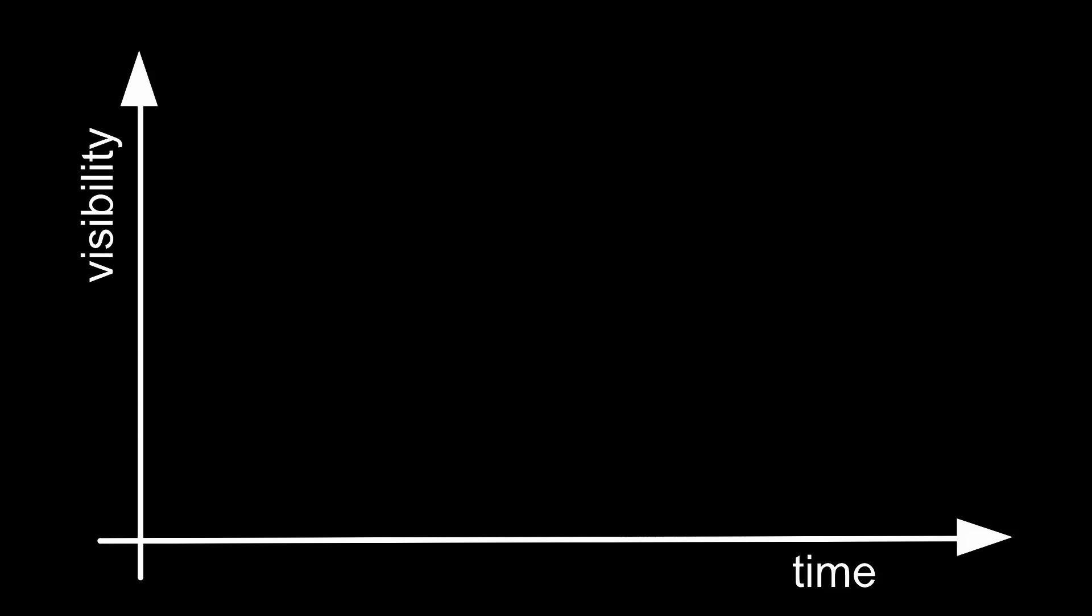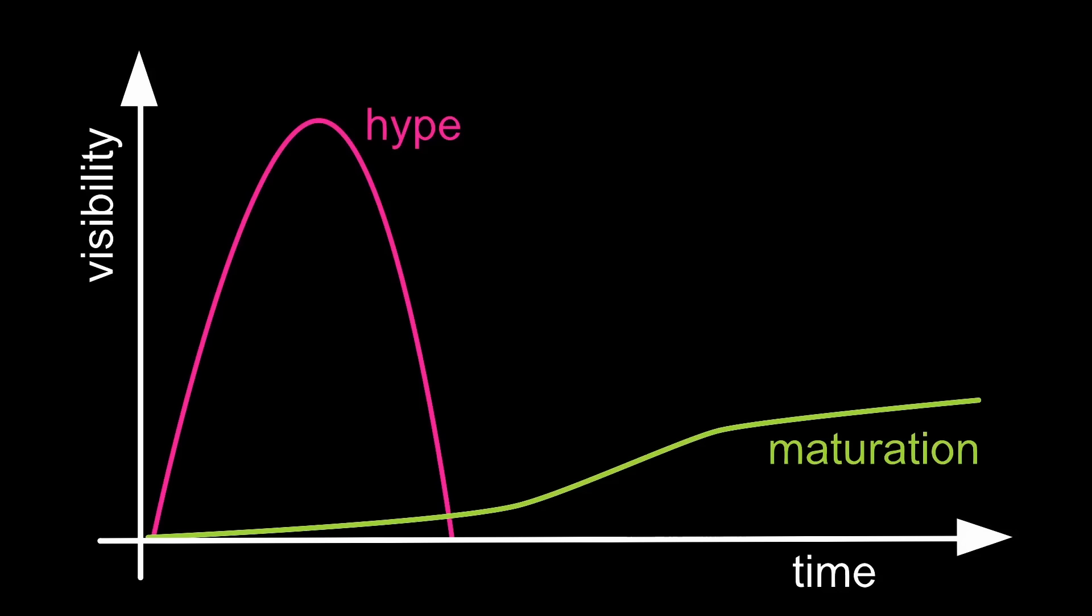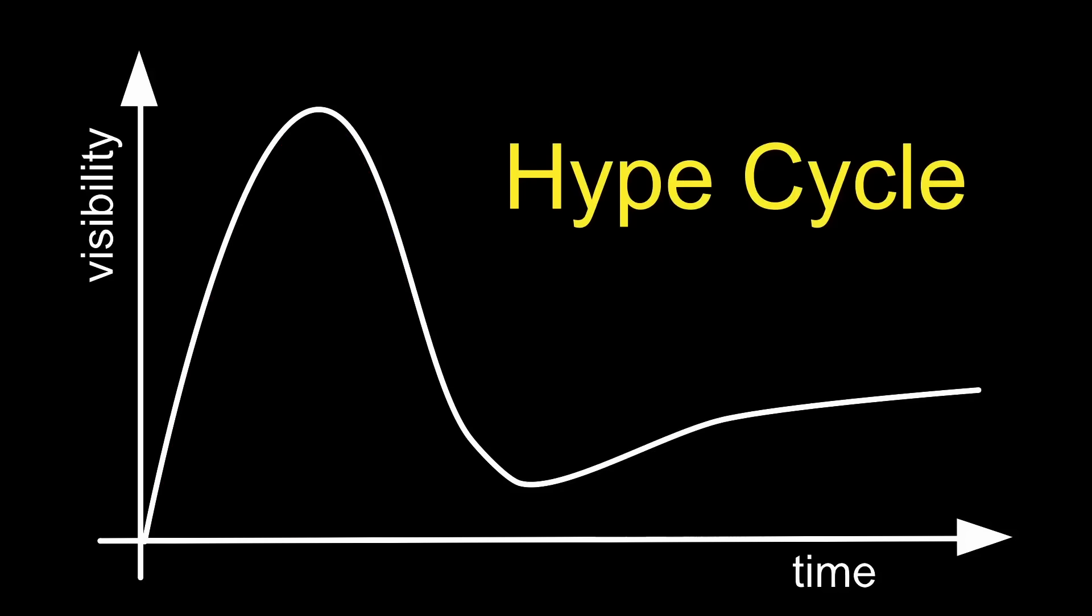The early visibility of a technology is driven by excitement that will fade away unless the technology is sufficiently mature to make it into application. The hype cycle then combines both the initial excitement and the maturation.